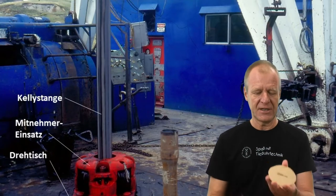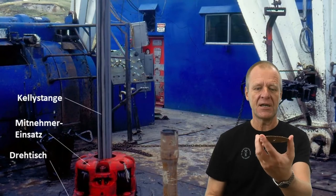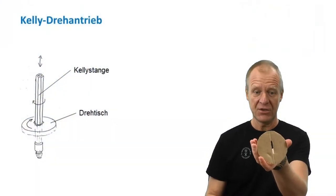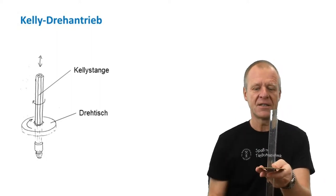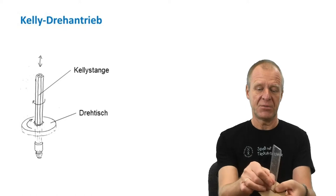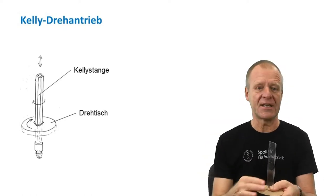I have a little model here. For a Kelly drive system, first we need a rotary table which is built into the rig floor of the drilling rig. In the middle of the rotary table there is a hole and the Kelly rod fits into this opening. I have a ruler here to demonstrate that, but the real Kelly rod normally has six sides and is hexagonal in shape.